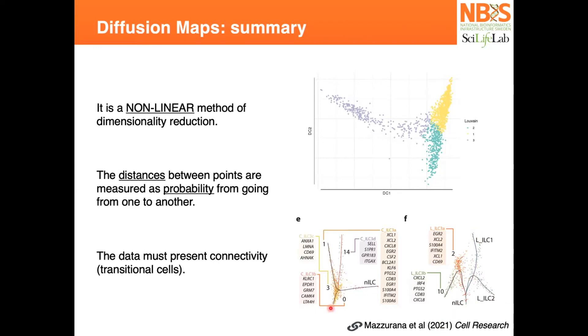The summary is that these distances in the diffusion maps are measured in probability, which is much more meaningful than, for example, using UMAP, which measures the distances between the cells. In diffusion maps, you are accounting for probability. You are not just separating clusters like in UMAP or t-SNE, but you want to find the intermediate cells that are connecting the clusters as well.